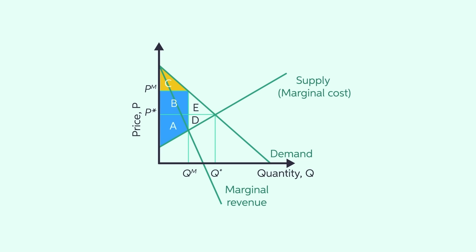Notice that, relative to surplus division in perfect competition, the monopolist took area B from the consumers. But what happens to areas E and D? Well, in a monopoly production stops at QM. It does not go all the way to Q star, as in perfect competition.